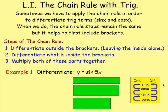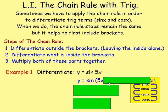Let's try an example. Example 1: differentiate y equals sine 5x. Here, we're wanting the sine of 5x. The 5x is together, so when we're thinking about brackets, we're imagining brackets around that 5x — it's the sine of that whole thing, the whole 5x.